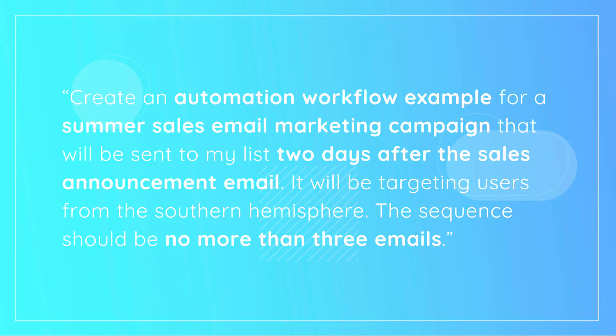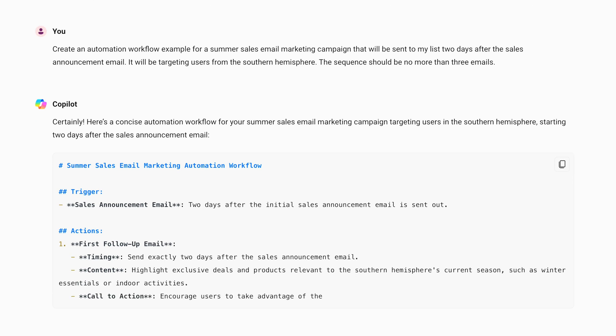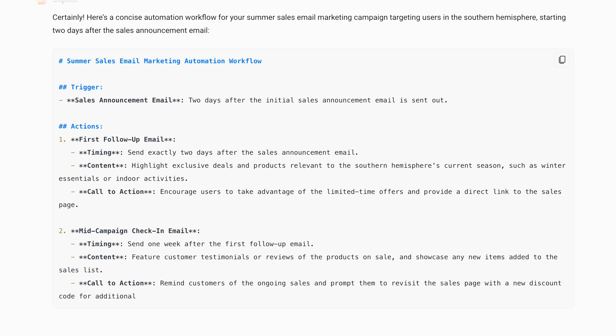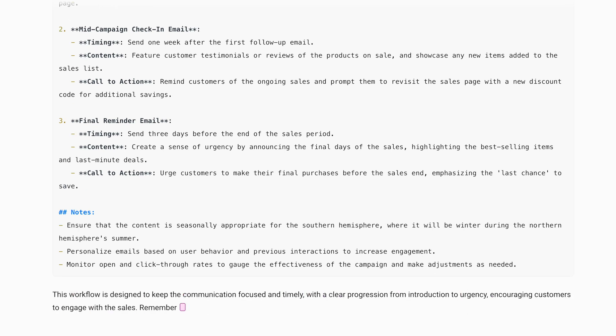This is a good starting point. Let's say that we need to create a more advanced campaign — in this case, we need to tweak our prompt to add more details. Create an automation workflow example for a summer sales email marketing campaign that will be sent to my list two days after the sales announcement email. It will be targeting users from the Southern Hemisphere. The sequence should be no more than three emails. Now let's see what we got: a comprehensive automation workflow complete with email content suggestions and tips for maximum impact.